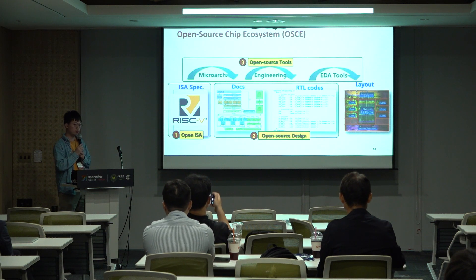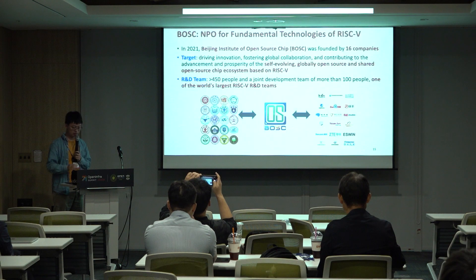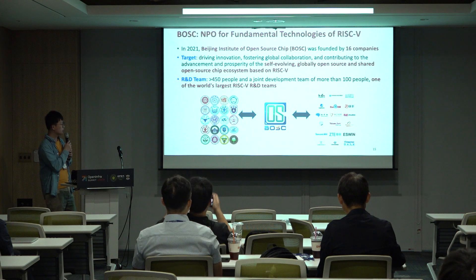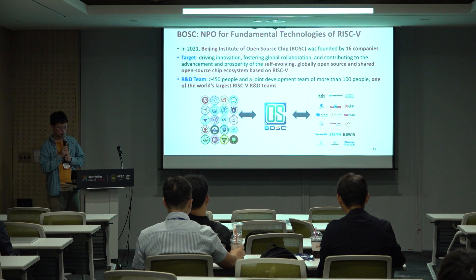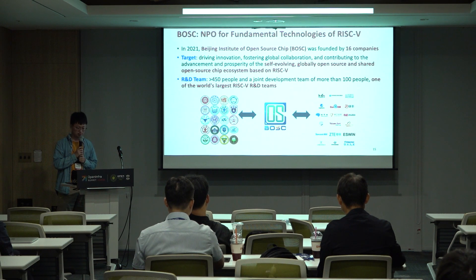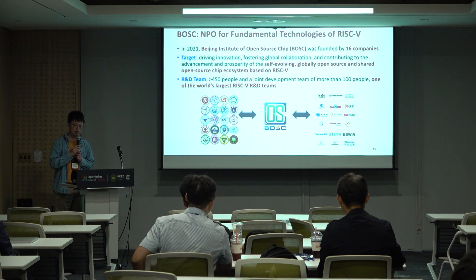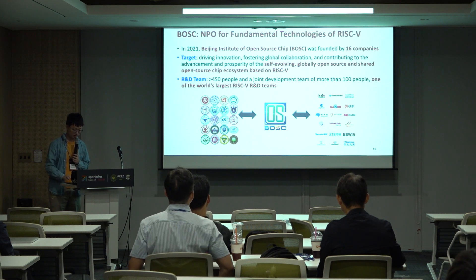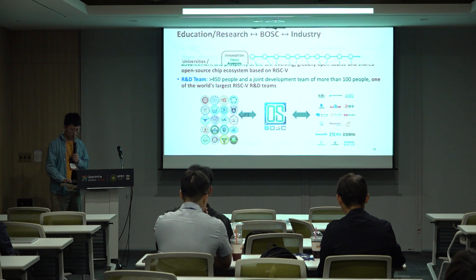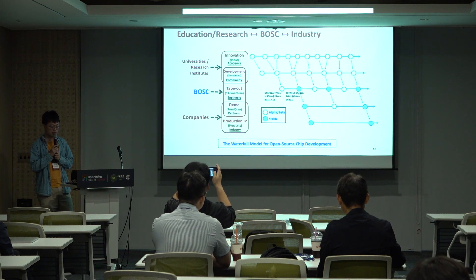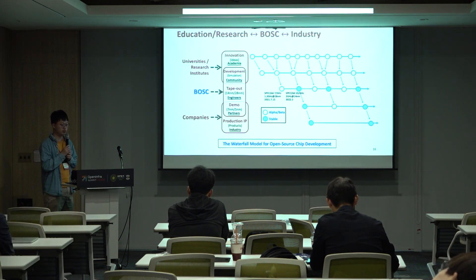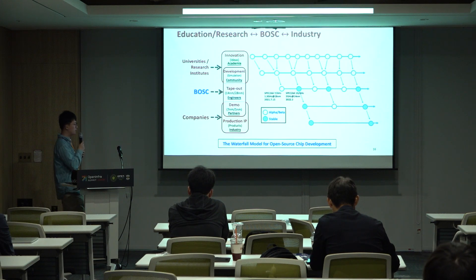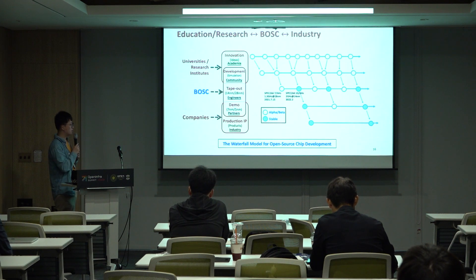Today my talk will focus on the three levels of the open source chip ecosystem. Let me introduce ourselves as the Beijing Institute of Open Source Chip, founded in 2021. Its target is to drive innovation toward a self-evolving, globally shared open source chip ecosystem based on RISC-V. Currently we have about 450 people and a joint team from 18 companies of more than 100 people, making us one of the world's largest RISC-V research and development teams. Our position is to become a coordinator between universities and companies — universities are very good at innovations and proposing novel ideas, while companies are very good at production with large engineering teams to convert these ideas into products.